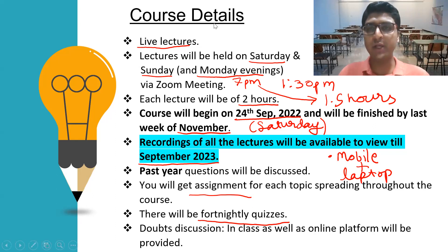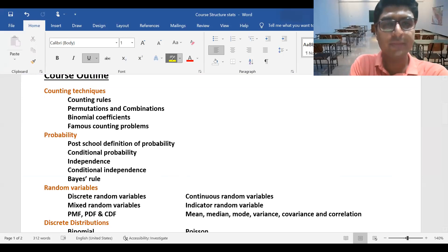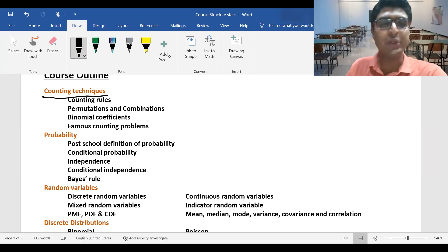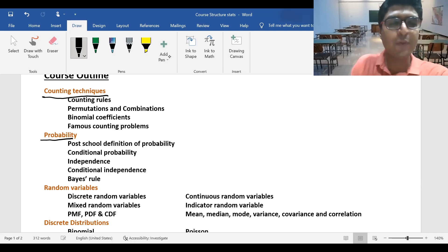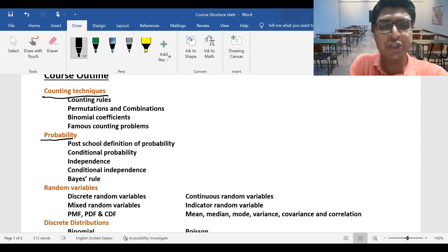Let me talk about the course outline. We'll start with counting techniques — some methods you may already know and some new ones we'll develop. Then we'll move on to basic probability: the naive definition, where everything is assumed equally likely, and then the post-school axiomatic definition. This will include conditional probability, independence, conditional independence, and Bayes' theorem.